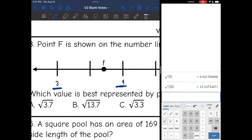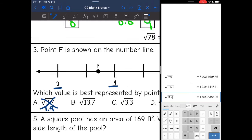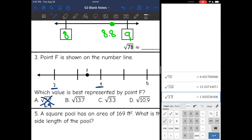So square root of 3.7 is 1.9. That is not between 3 and 4, so that one won't work. Next one is square root of 13.7. That's between 3 and 4, and it is closer to 4, so that one might work.